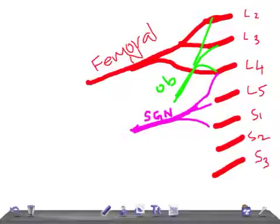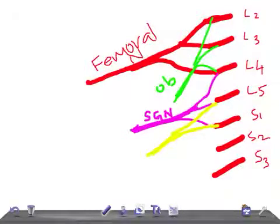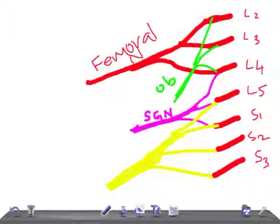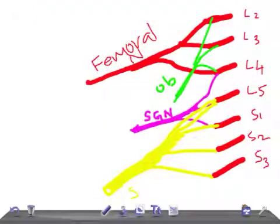Now I will tell you how the sciatic nerve is formed. The sciatic nerve is a very important nerve of the lower limb. It takes fibers from L5, S1, S2, and S3 — this forms one part of the sciatic nerve. The other part comes from L2, along with fibers from S1 and S2. Together these fibers form the sciatic nerve.